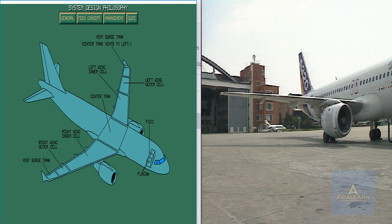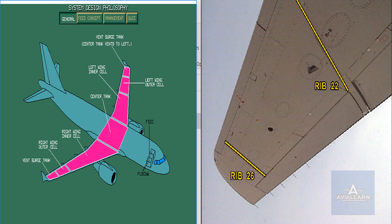The objective of this module is to highlight the different functions of the fuel system including new technology items. The fuel system stores fuel in five tanks. It supplies fuel to the engines and APU, and recirculates fuel to cool the oil of the IDGs, integrated drive generators.